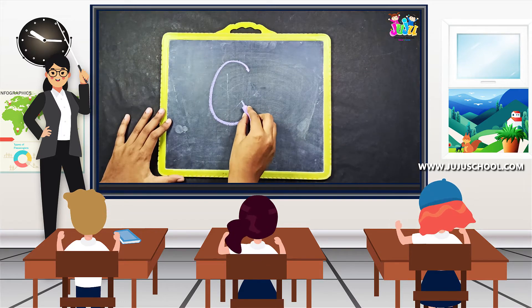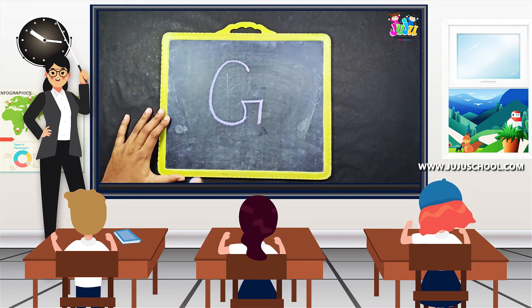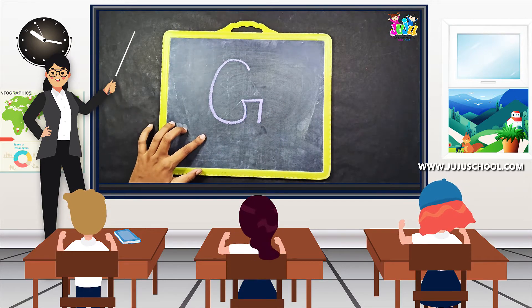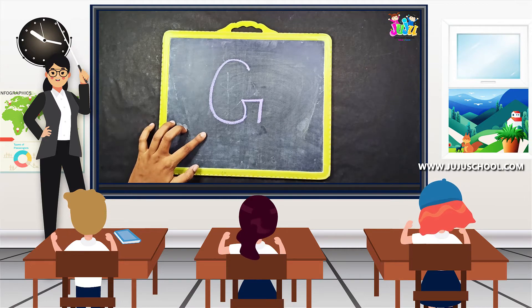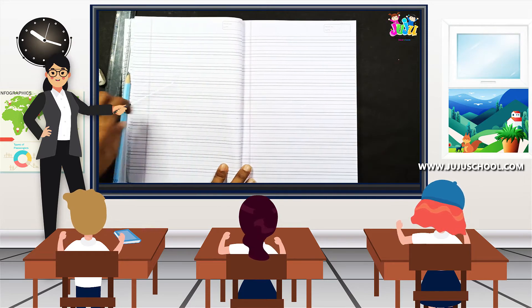Then put a sleeping line near the curve and a small standing line. That's it, that is letter G, uppercase G. Now I have taken a four-line notebook and I'm going to divide it into five equal parts.